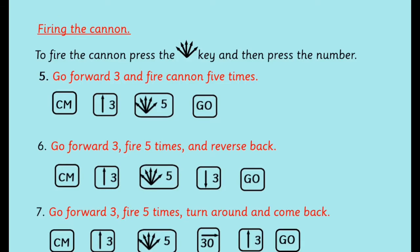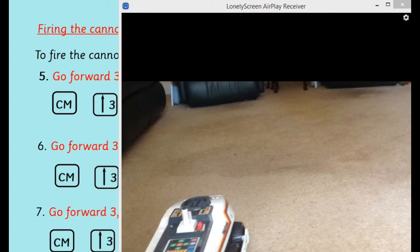The next one is similar - we go forward three, fire five times, but then we reverse back. So we have again CM, forward three, fire five, but go back three, reverse back, and then go. So I've got this one.